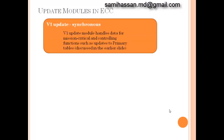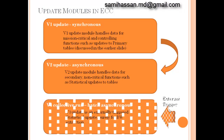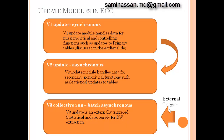Before we go into the delta types, let's do a quick recap of the update processes discussed in part one of this series. The update modules in ECC are basically three: V1 update, which is synchronous, handles data from mission-critical and controlling functions such as updates to primary tables. V2 update, the asynchronous update, handles secondary non-critical functions such as updating statistical tables. Finally, V3 collective run, which is batch asynchronous, is an externally triggered statistical update purely for the purpose of BW extraction.